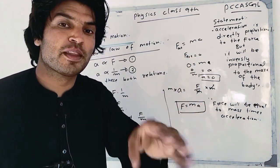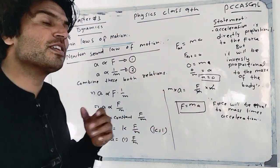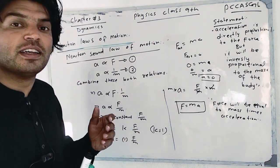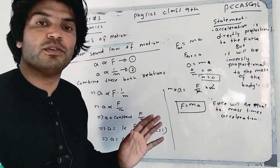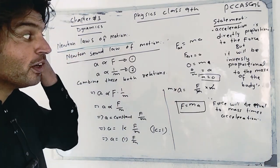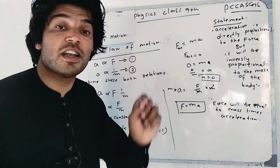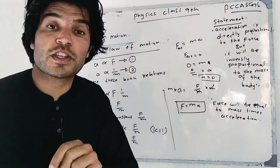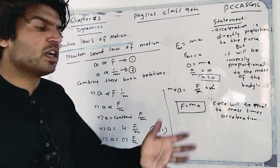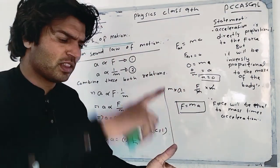When external force is zero and acceleration is zero, the body continues with constant velocity — it remains in uniform motion. This is also consistent with Newton's First Law. So Newton's Second Law includes the First Law as a special case. This connects the first, second, and third laws.